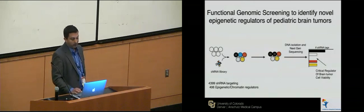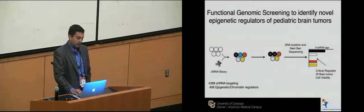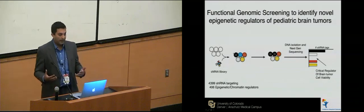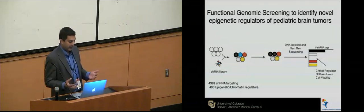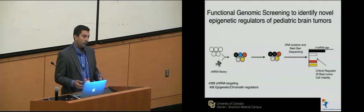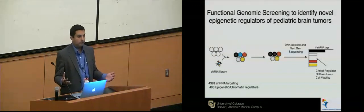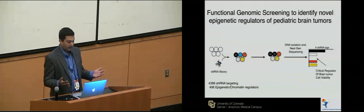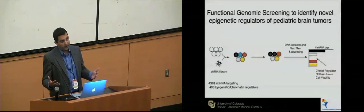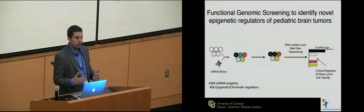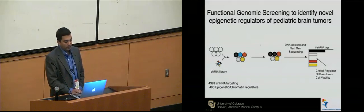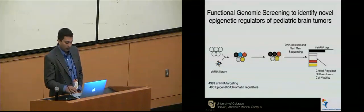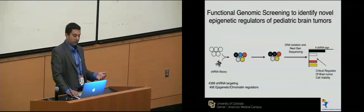We transduced our medulloblastoma cells — starting with medulloblastoma as our first tumor model. The concept is that with one shRNA per cell, you have a pool of cells each containing an shRNA. You allow them to grow for three to five passages — about 21 days — and look to see if shRNAs targeting critical growth genes are depleted, while those allowing faster growth are enriched. You then sequence the DNA to identify what's missing and what's present.